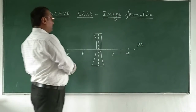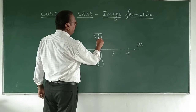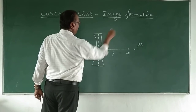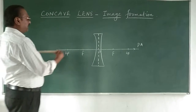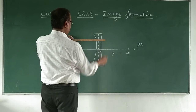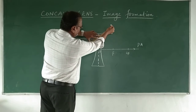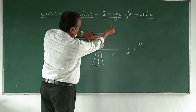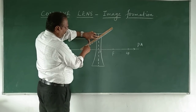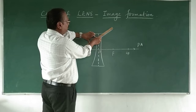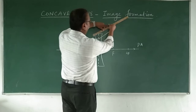In a concave lens, if a ray comes parallel to the principal axis, it will diverge. We extrapolate it backward and get a point. That point which is striking on the principal axis is called the focus. This ray is diverged.